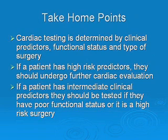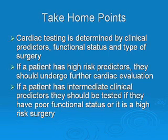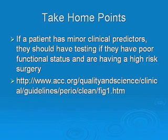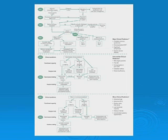In review, the take-home points: first, determine if they've had any recent revascularization, stress testing, or angiogram. If not, focus on their clinical predictors. If they have any major clinical predictors, they need further cardiac evaluation. If they have intermediate clinical predictors, test if they have poor functional status or are undergoing high-risk surgery. If they have minor clinical predictors, test if they have poor functional status and are undergoing high-risk surgery. There is an algorithm available — just Google American College of Cardiology and American Heart Association practice guidelines to find it.